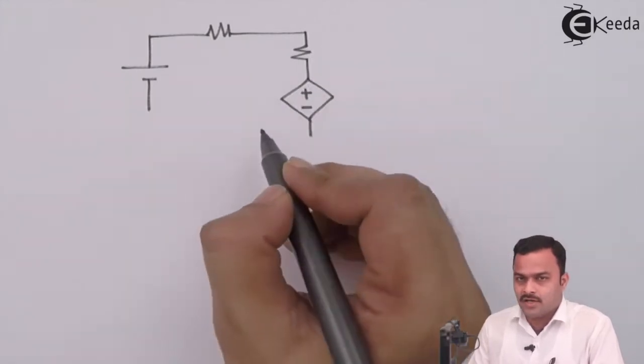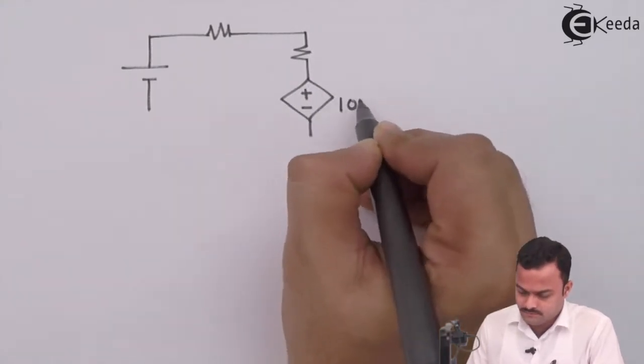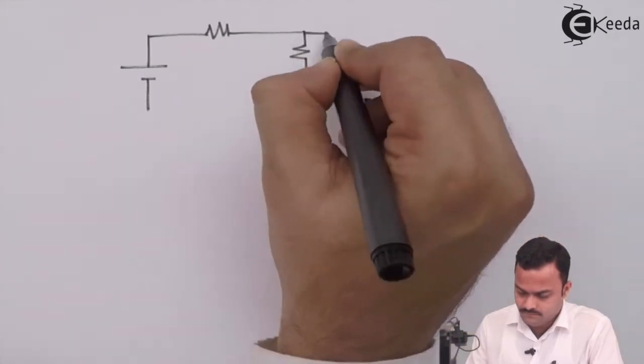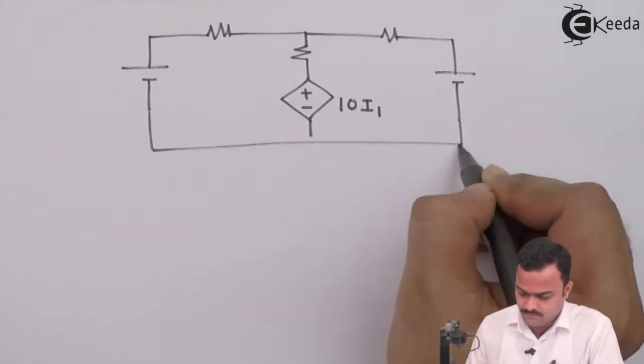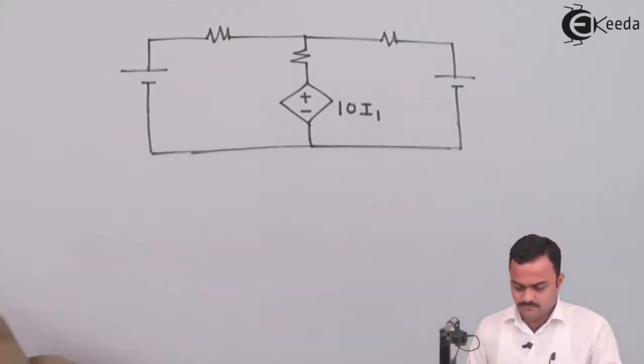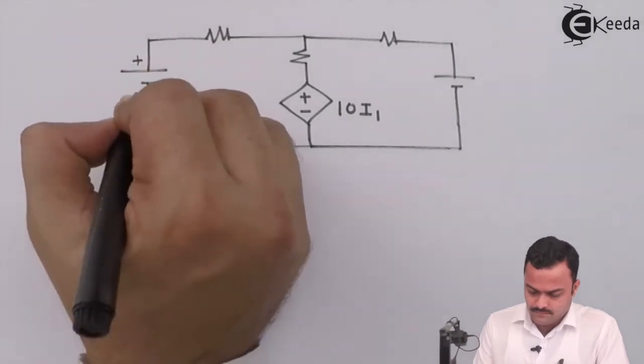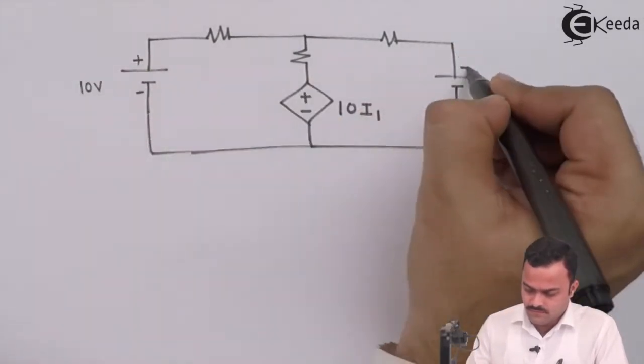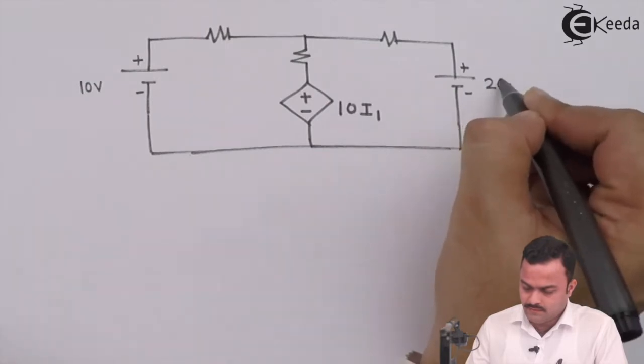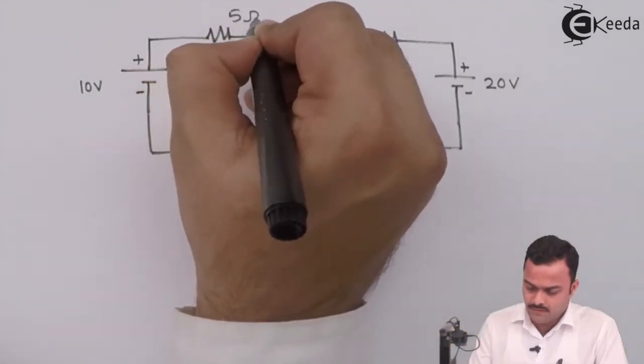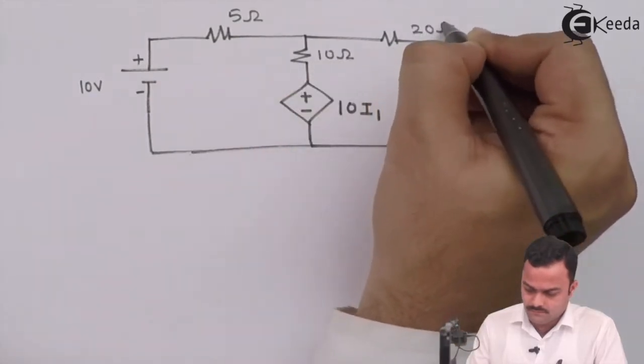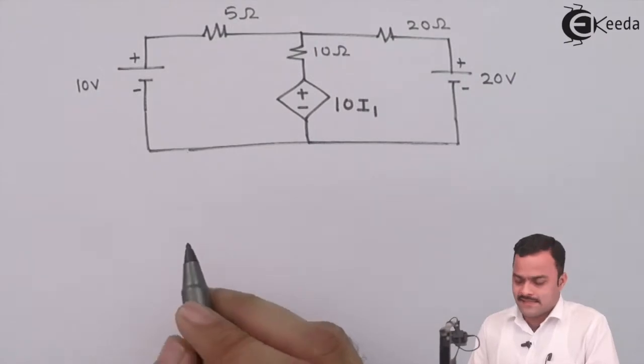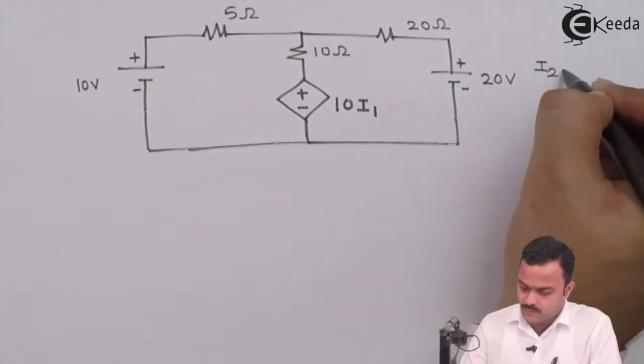Let's consider a current controlled voltage source. Randomly give the values, and let's consider we have to get a current flowing through 20 ohm using mesh analysis.